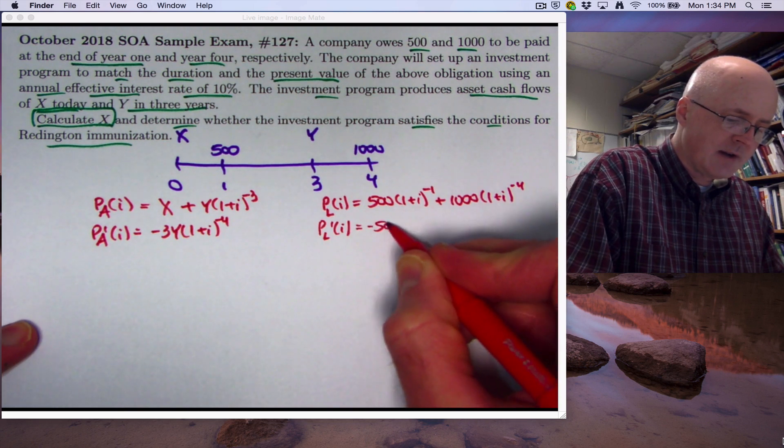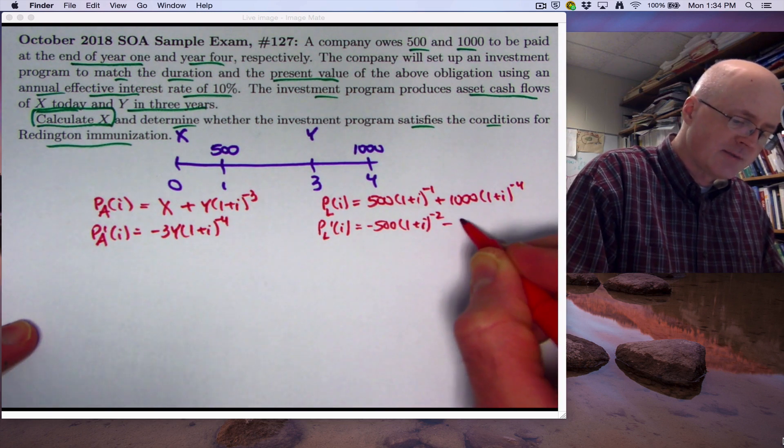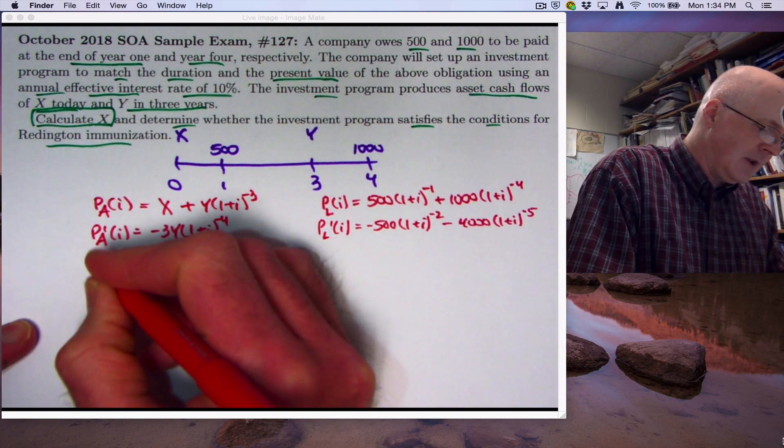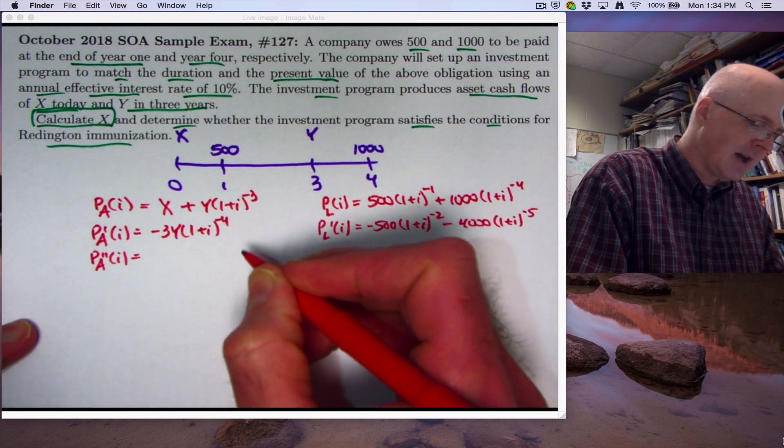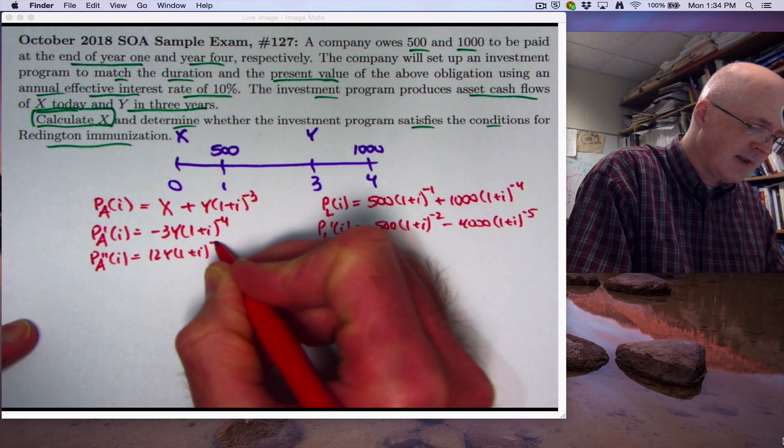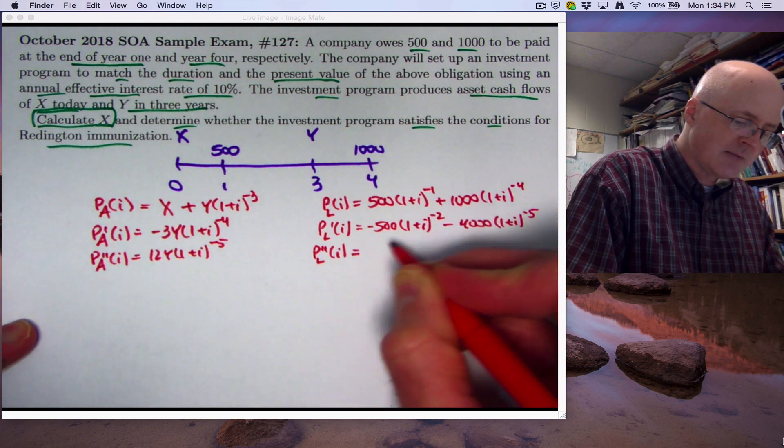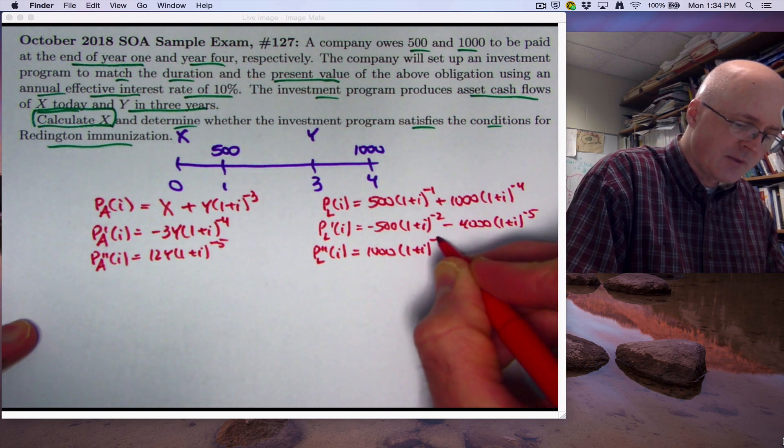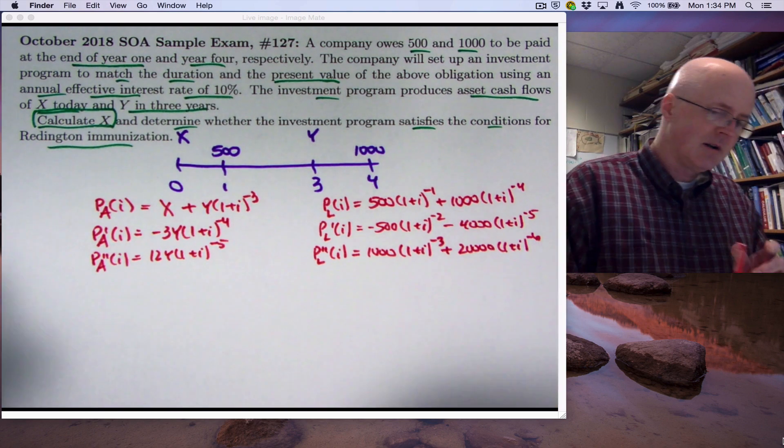Same kind of thing happens with the liabilities. And we're going to get negative 500, one plus i to the negative two times one, and then a minus 4000, one plus i to the negative five times one. We do need the second derivatives here because we are checking for Reddington immunization or not. Bring down the negative four, get positive 12y, one plus i to the negative five. And for the second derivative of the liability present value, we get positive 1000, one plus i to the negative three, plus 20,000, one plus i to the negative six.